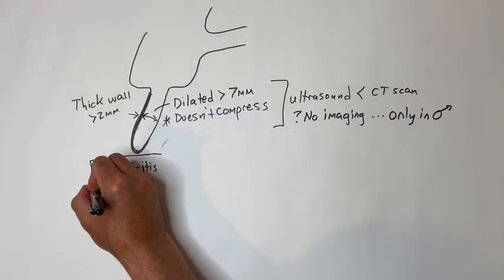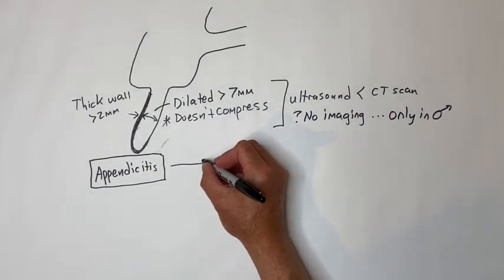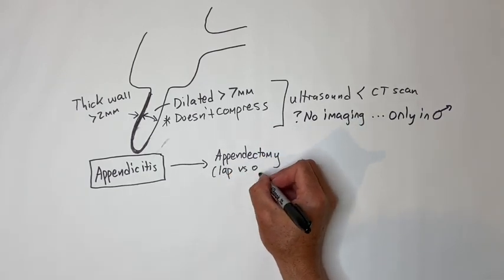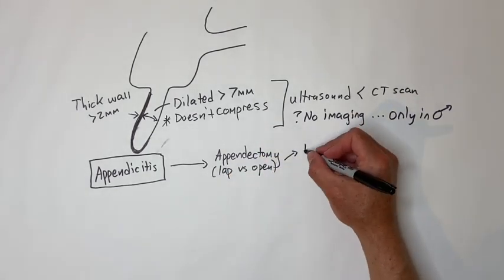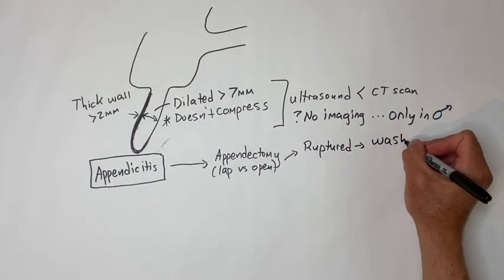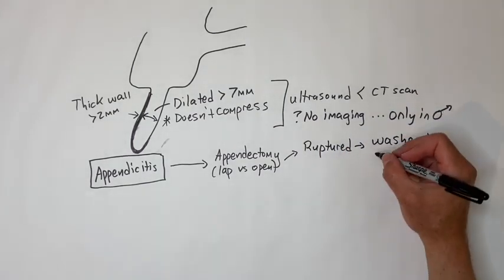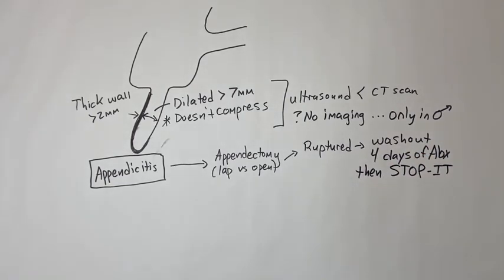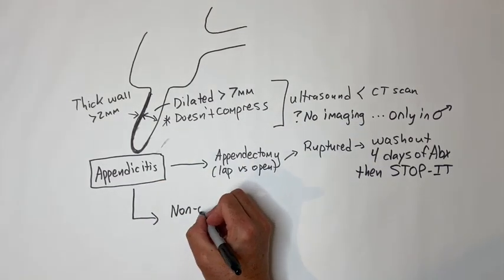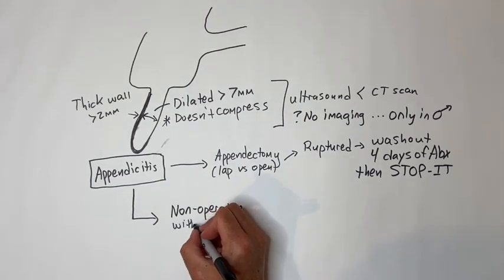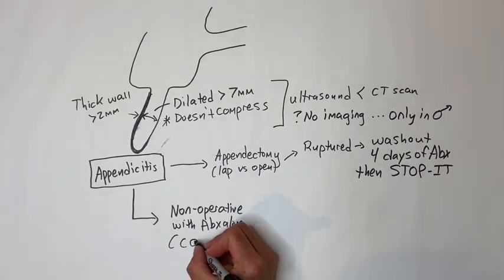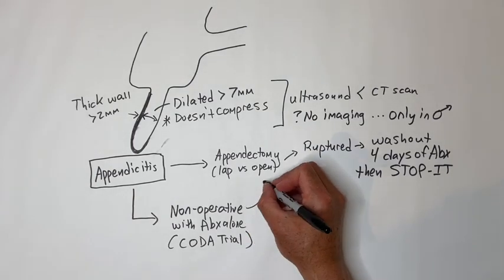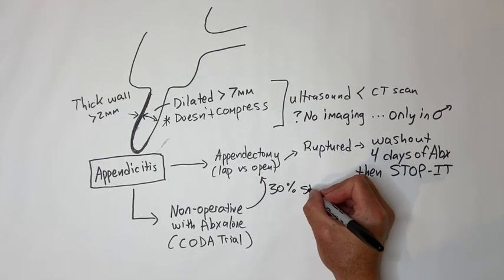Appendectomy is generally still considered the best treatment for non-ruptured or recently ruptured appendicitis — laparoscopic or open through McBurney's incision, muscle splitting in the right lower quadrant. If it's a ruptured appendix and you do a good abdominal washout, only continue post-operative antibiotics for four days as per the STOP-IT trial. Non-operative treatment with antibiotics alone, as studied in the landmark CODA — Comparison of Outcomes of Antibiotic Drugs in Appendectomy — trial, can be considered in some early appendicitis, although 30% still needed surgery within a few months.